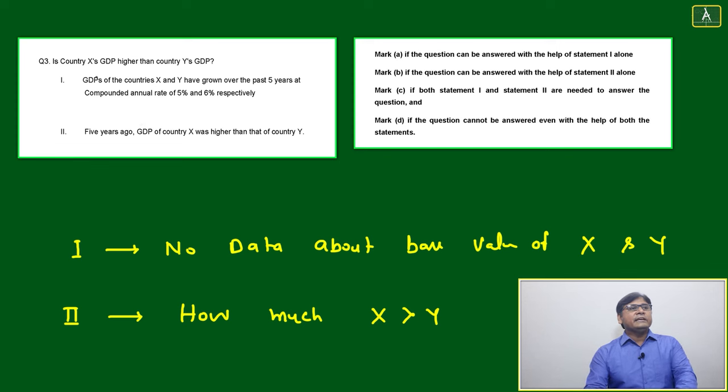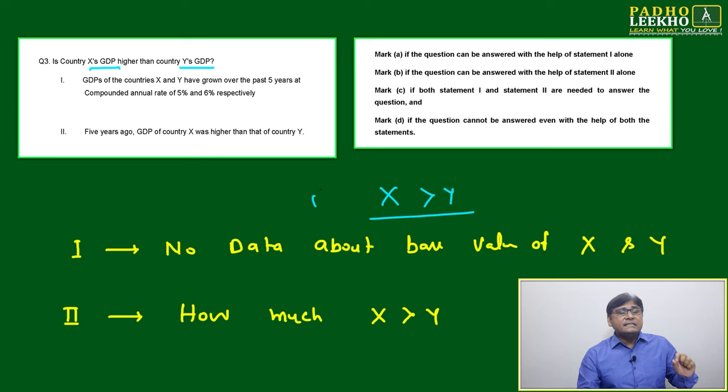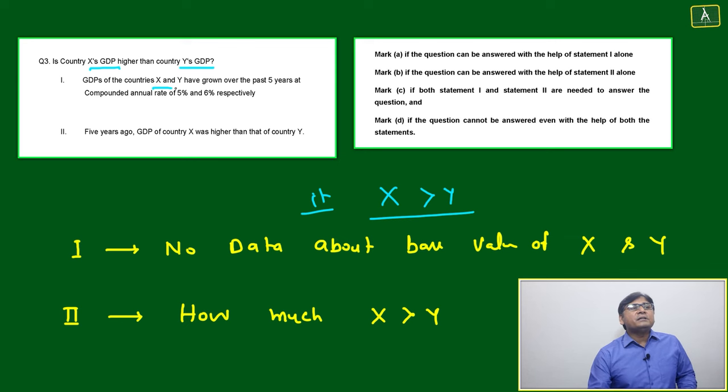The next question is very interesting: Is country X's GDP higher than country Y's GDP? Statement one says GDP of country X and Y have grown over the past five years at compounded annual rates of 5% and 6% respectively.